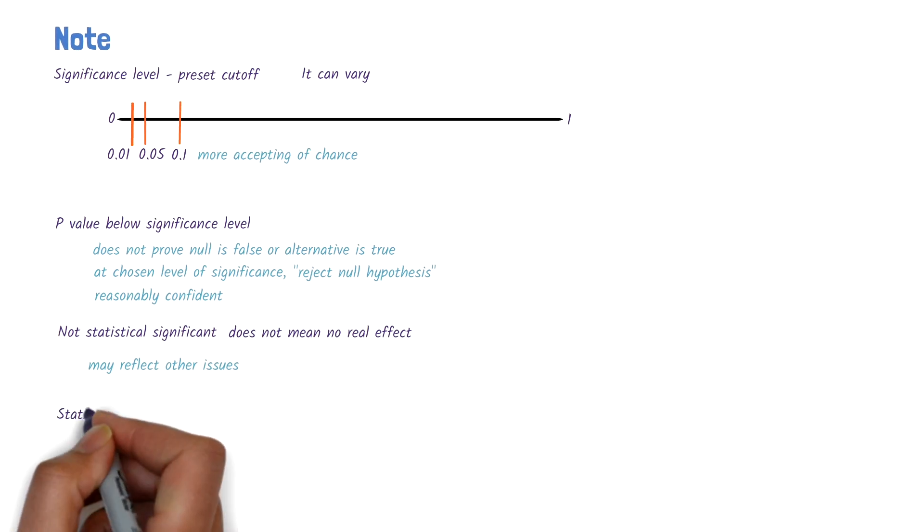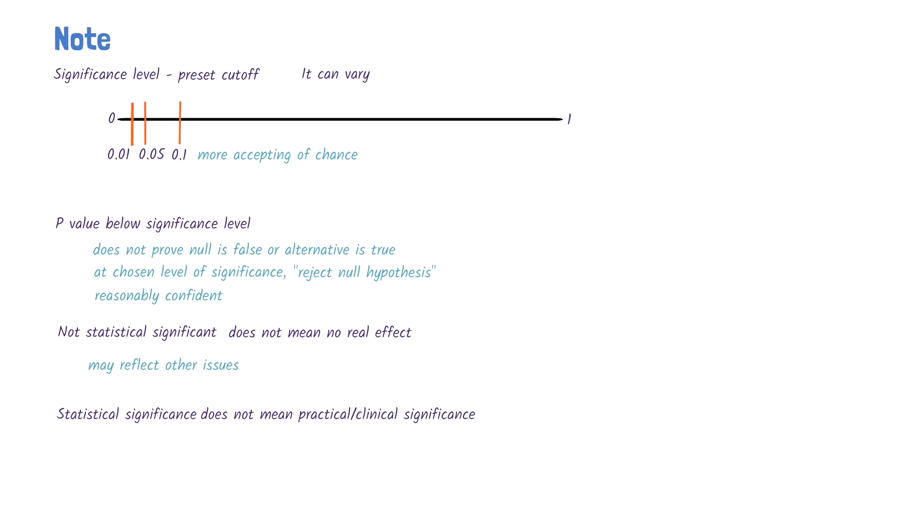A statistically significant result does not necessarily mean that there is practical or clinical significance. In our example of a cholesterol study, a statistically significant difference in cholesterol levels may not necessarily translate into better health outcomes, such as fewer heart attacks, strokes, or deaths.